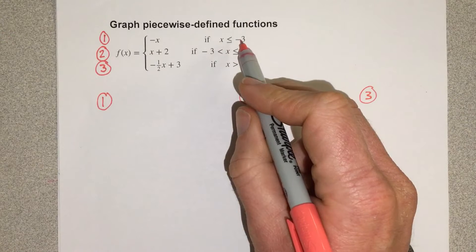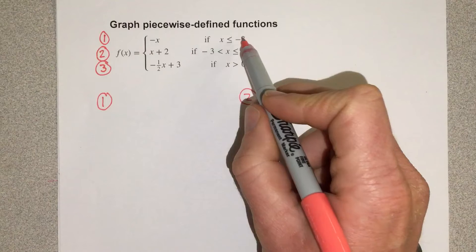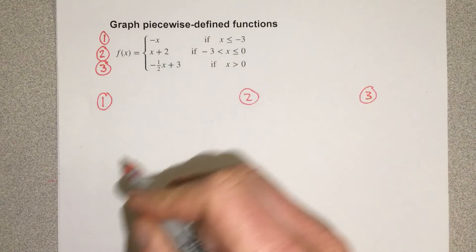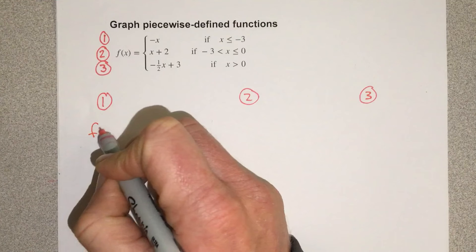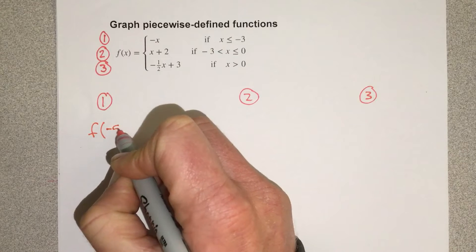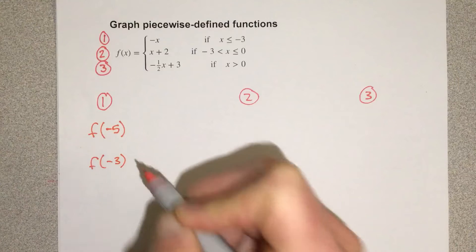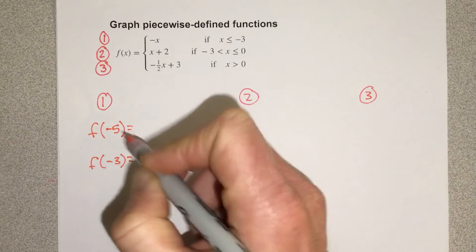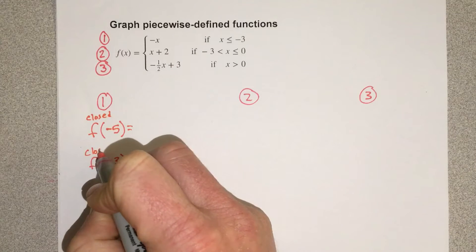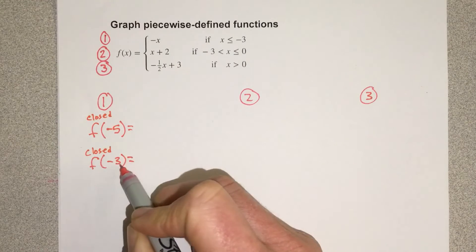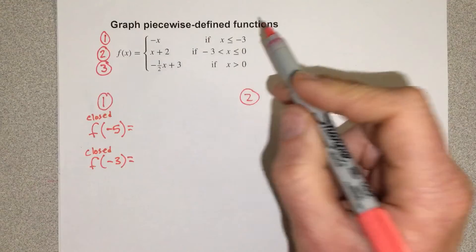I'm going to pick two points for each function — the endpoint of the domain and then one other point that's in the domain. I'll start with f of negative five and then f of negative three. Both will be closed dots. The reason negative three is closed is because negative three is less than or equal to negative three, so it's in the domain of the top function.